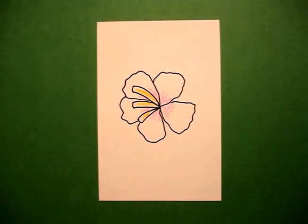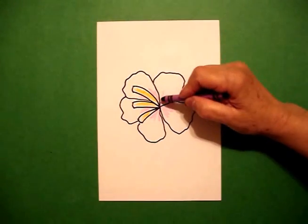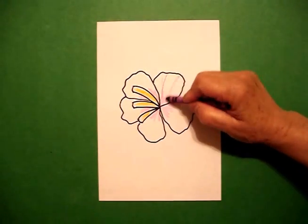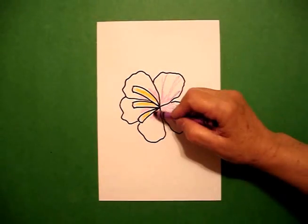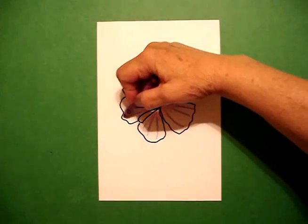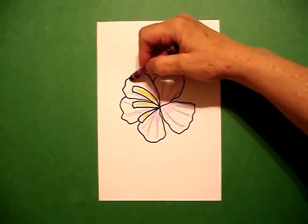And then I'm going to take a purple and I'm going to lightly put some lines on my petals. Without coloring it solid, I want to keep a little bit of that white showing.